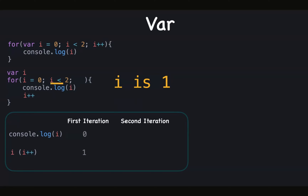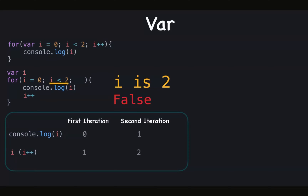In the second iteration, i is one. We check the condition: one less than two, which is true. The code inside the block gets executed — we get console.log one, and i gets incremented to two at the end of the second iteration. In the next iteration, i is two. We check: two less than two, which is false, and the loop stops.